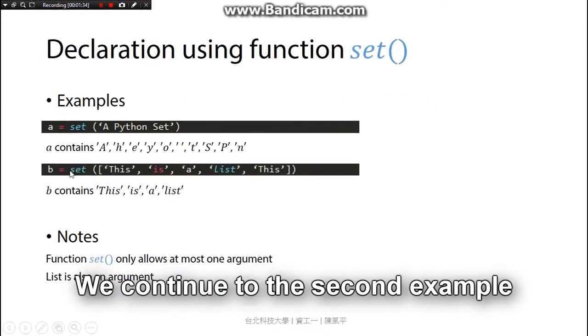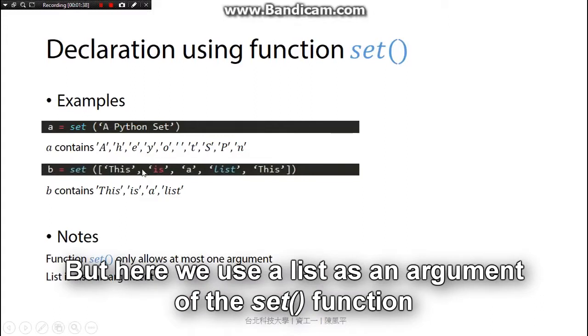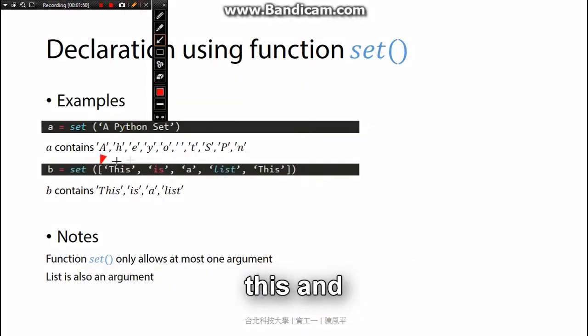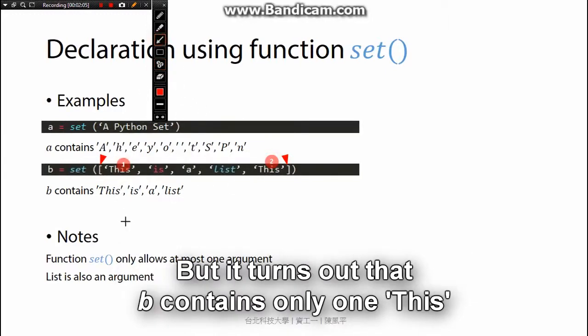We'll continue to the second example, which is the function set, but here we use a list as an argument of the set function. You can see here, a list will have this and this. We also notice that we have one this and two this, but it turns out that b contains only one this.